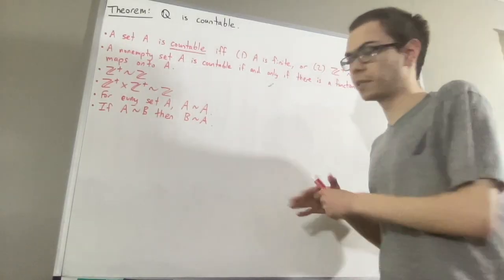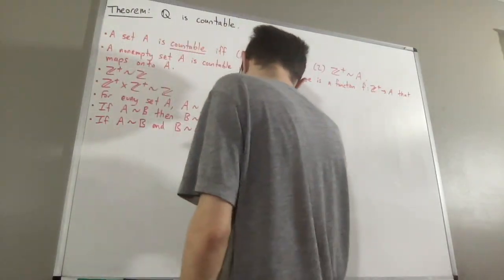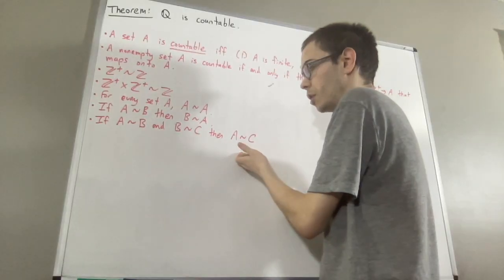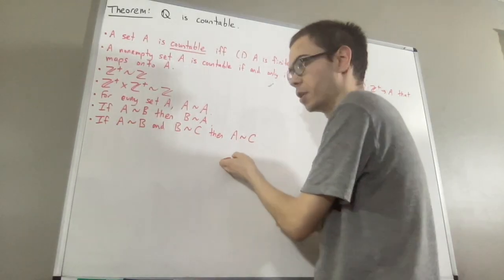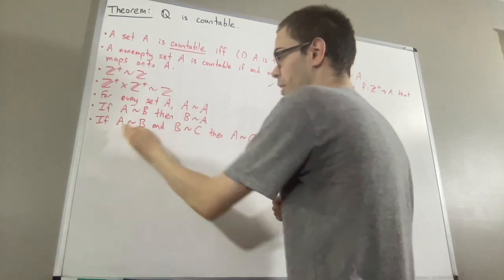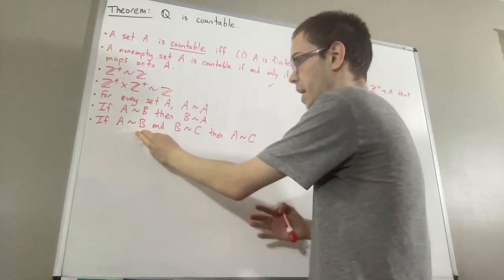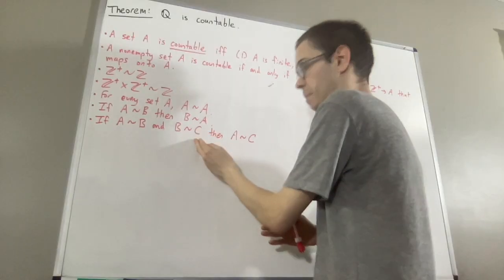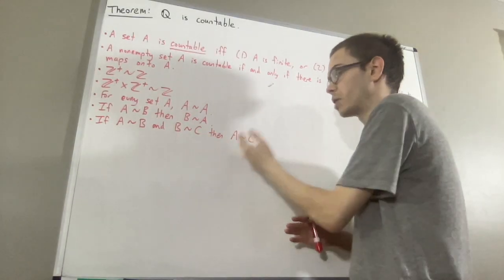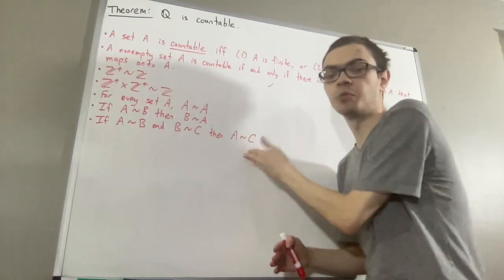You'll get a bijection from A to C. We're also going to be using a related fact: if f is a function from A to B that maps onto B, and G is a function from B to C that maps onto C, then G composed with F, which is a function from A to C, will map onto C.